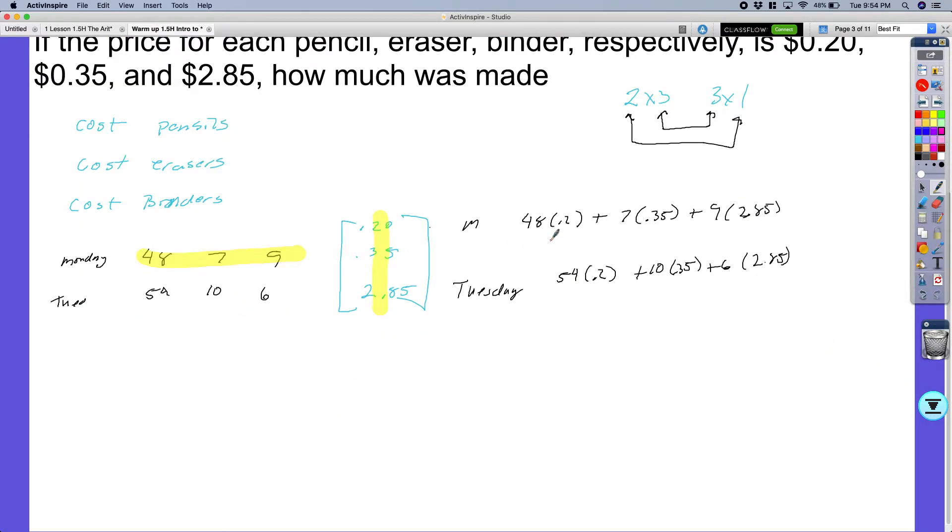I'll write it in pink right below. If I simplify this, 9.6, 2.45, 25.65, and then over here I would have had 10.8, 3.5, and 17.1. I'm just going to add all those values.